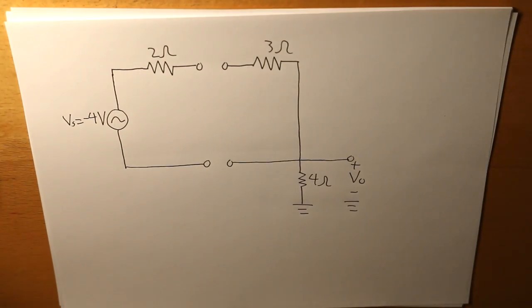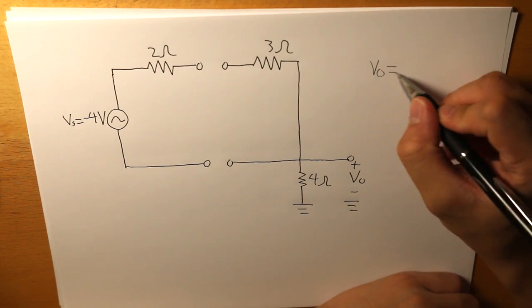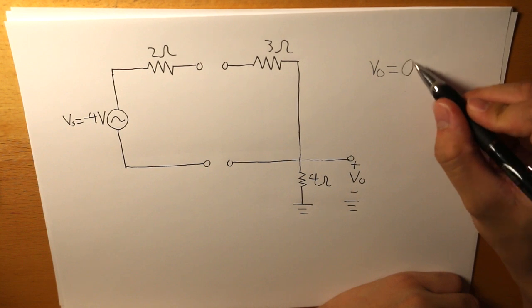And this is how our circuit is going to look like in that particular situation. There's no current. And since there's no current flowing through this 4 ohms, the output voltage is going to be 0 volts.